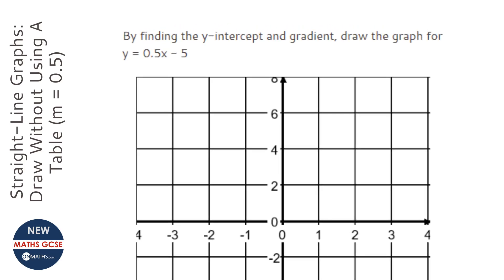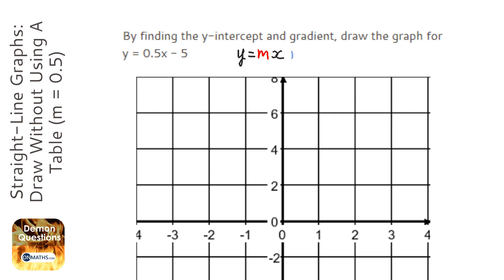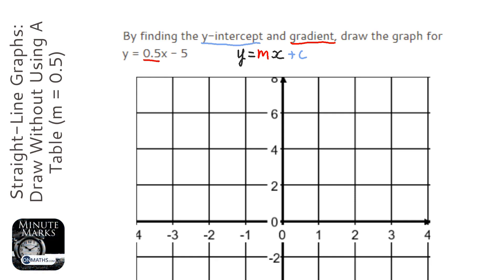The most important equation we have for this is y equals mx plus c. Here, m is the gradient and c is the y-intercept. So here the gradient is going to be a half and the y-intercept is going to be minus 5, because the gradient is the number before the x.